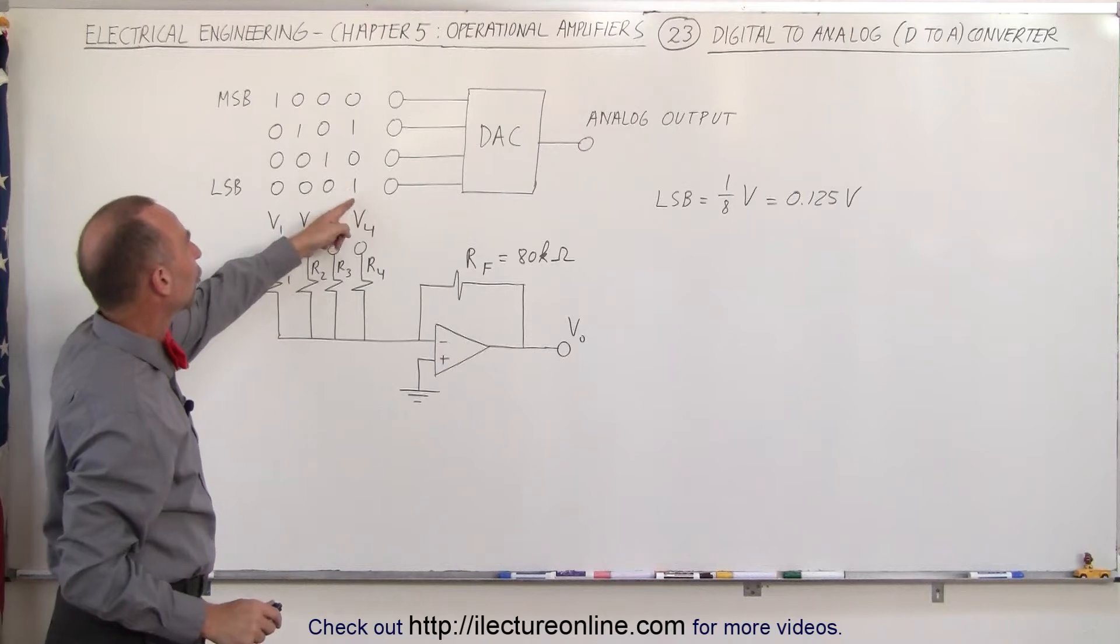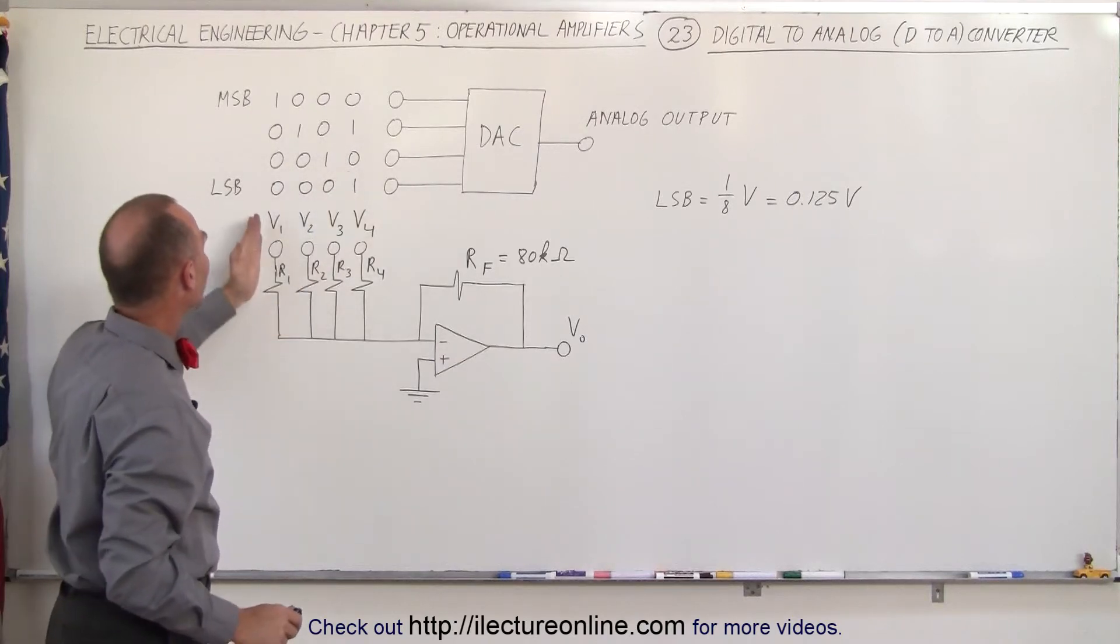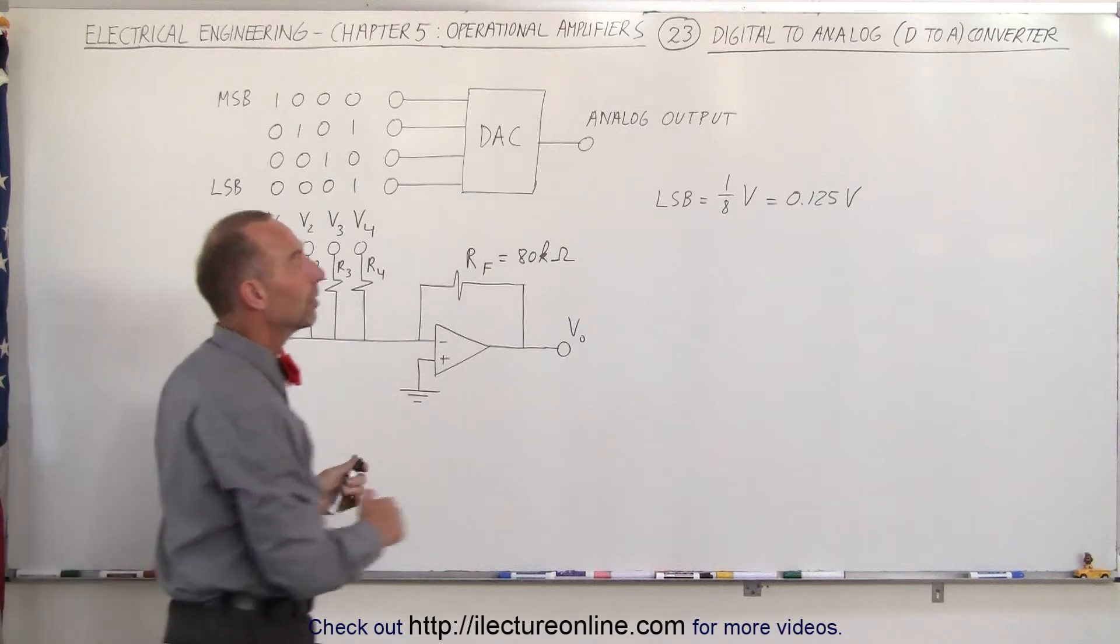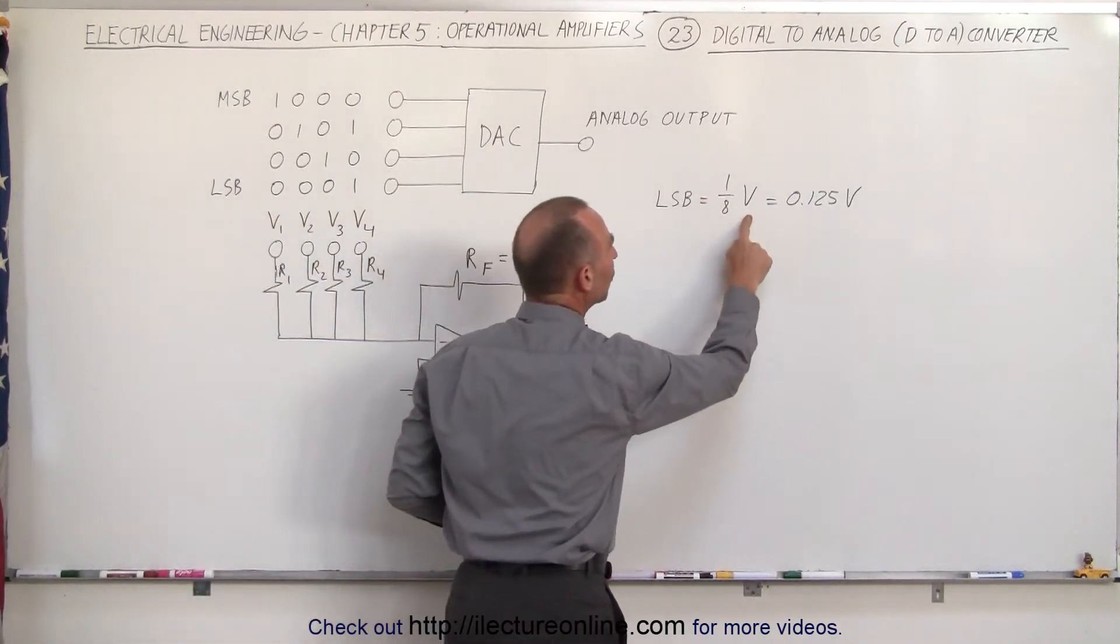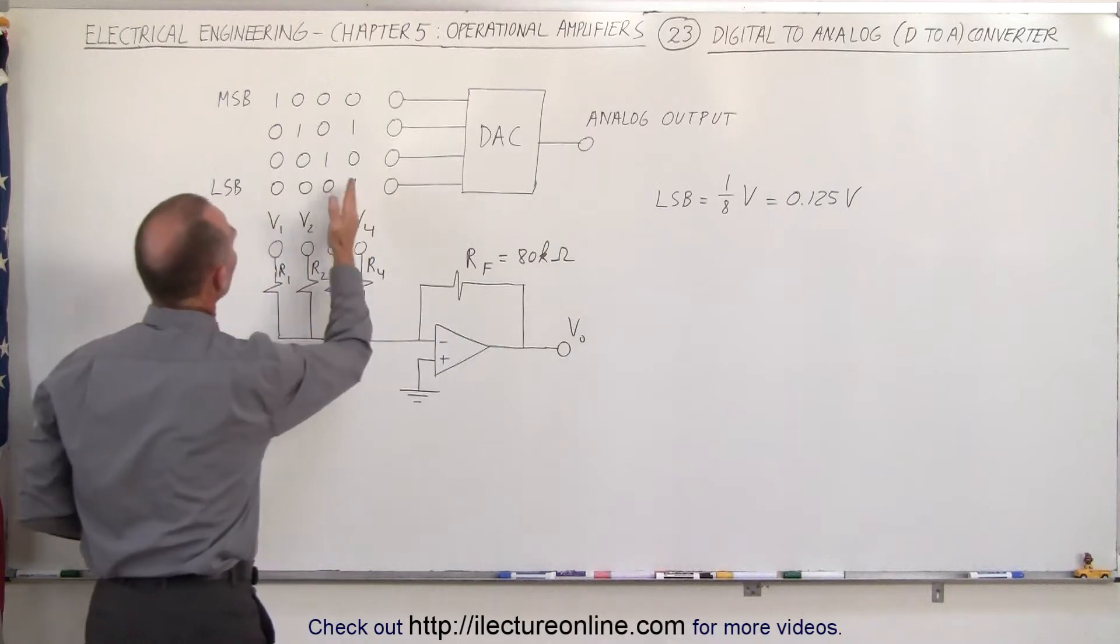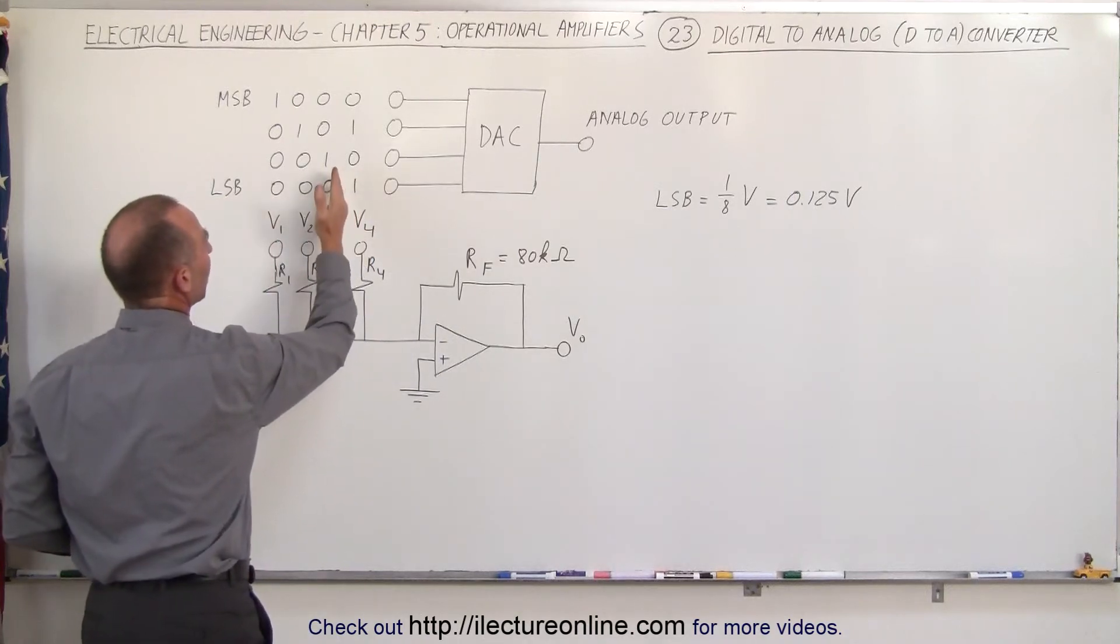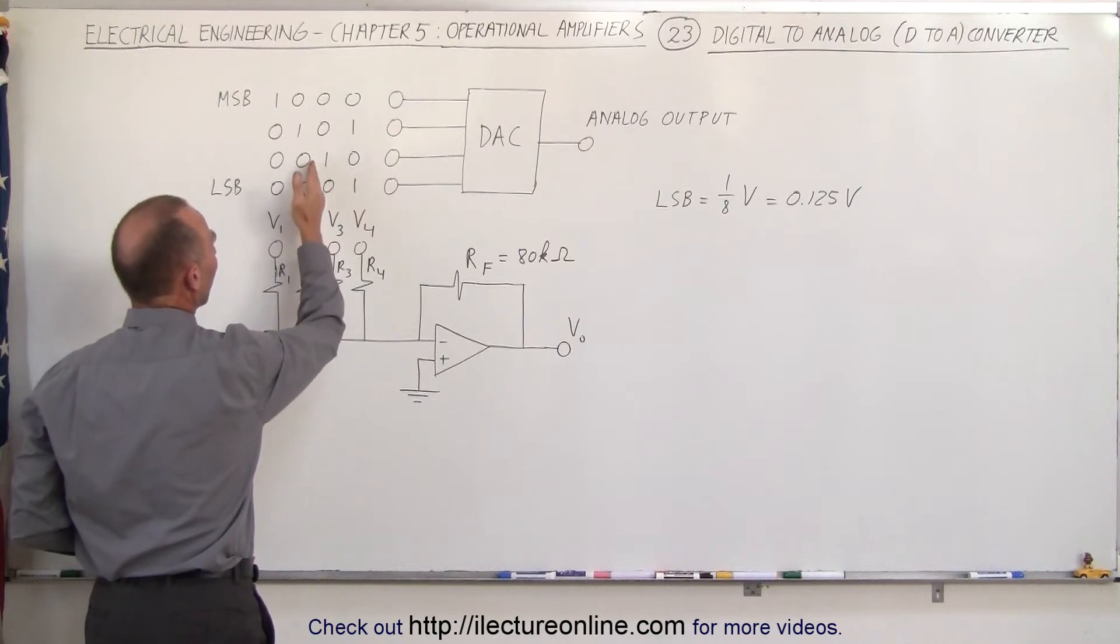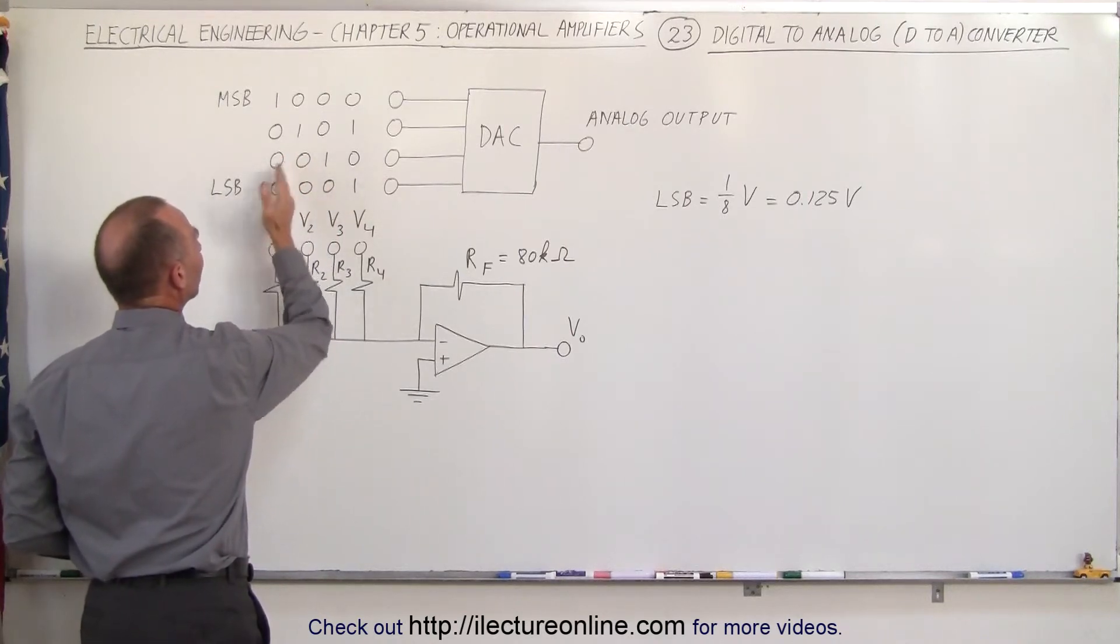Notice that V4 is associated with the least significant bit and V1 is associated with the most significant bit. If we want the least significant bit to be equal to one eighth of a volt, then this represents one eighth of a volt, this represents twice as much, two eighths or one quarter, this represents a half a volt, and this represents a full volt.